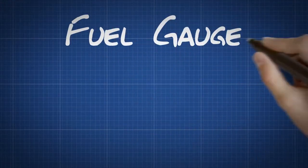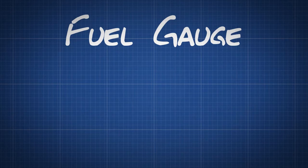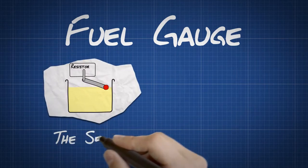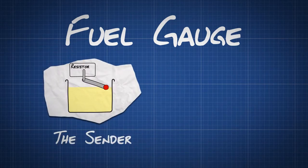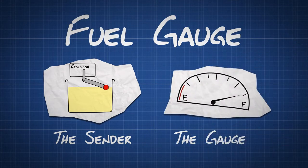How does a fuel gauge work? There are two main parts to a fuel gauge: the sender, which measures the level of fuel in the tank, and the gauge, which displays that level to the driver.